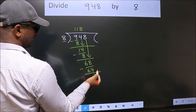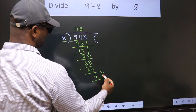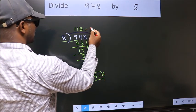No more numbers to bring down. So we stop here. This is our remainder. This is our quotient.